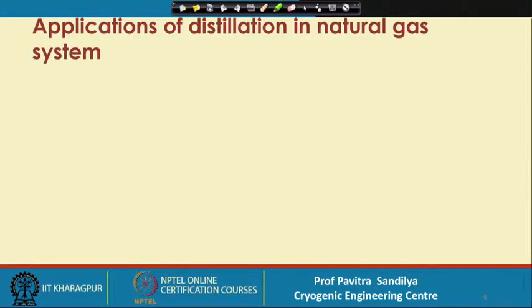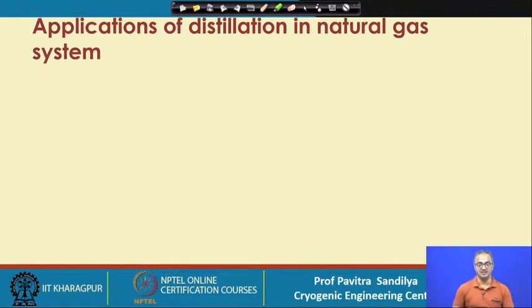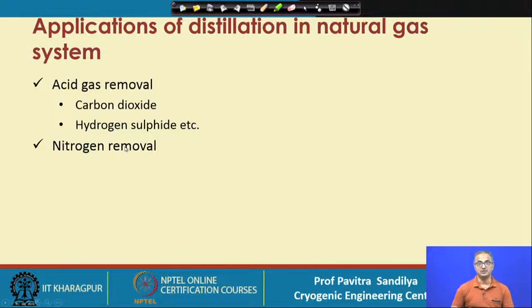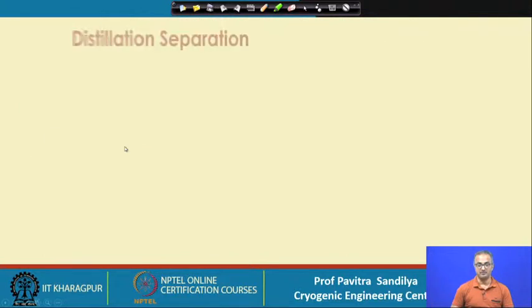Coming to the applications of distillation in natural gas systems, we basically use it for acid gas removal like carbon dioxide and hydrogen sulfide, and nitrogen removal.